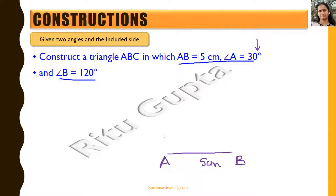To draw a 30 degree angle at point A, we open the compass to any radius and draw an arc intersecting AB at point E. With E as center and the same radius, we draw another arc cutting at point G. This gives a 60 degree angle. We then draw an angle bisector: opening the compass more than half of EG, we draw arcs from E and G that intersect at point D, and join AD to get 30 degrees.